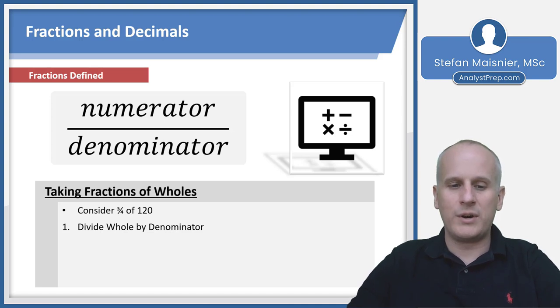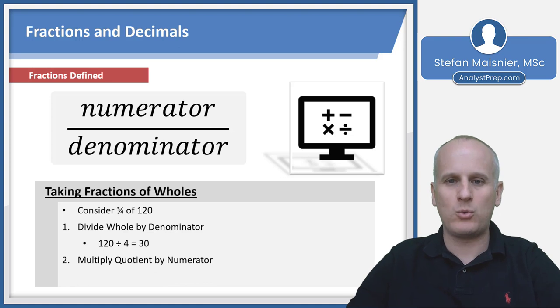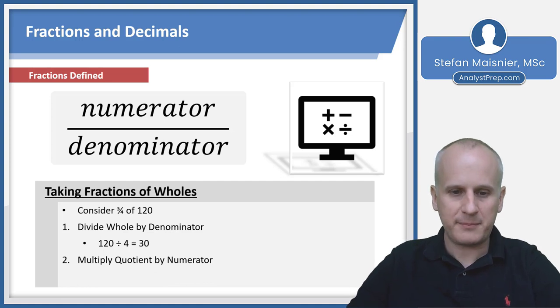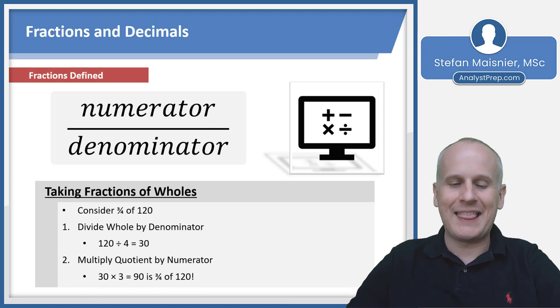120 divided by four is 30, so 30 is one fourth of 120. Then multiply that quotient by the numerator: 30 times three is 90, which is three quarters of 120. That's usually faster than going three times 120 equals 360, then dividing by four. Just keep it small by dividing by the denominator first when taking fractions of wholes.